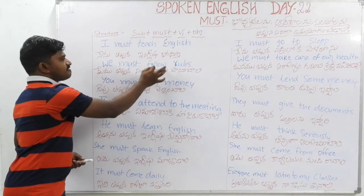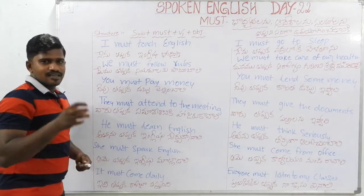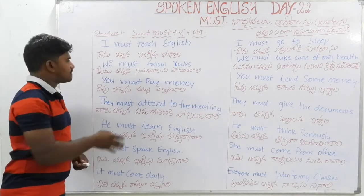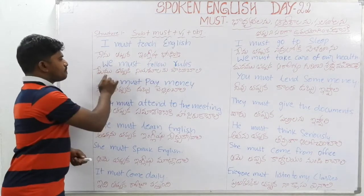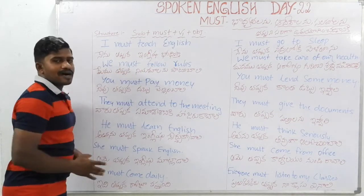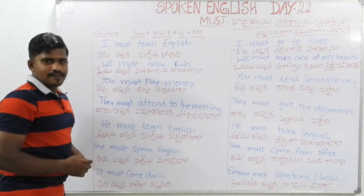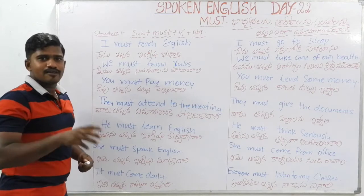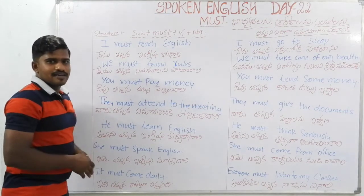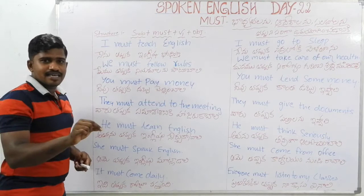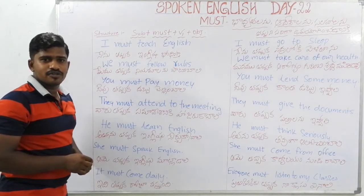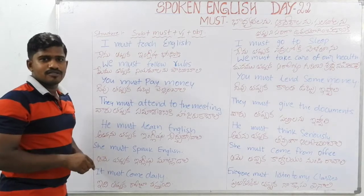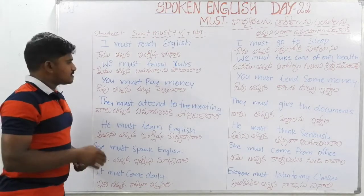We must follow rules. Rules are made to be followed. So the sentence is: we must follow rules. That is how you use it — we must follow the rules.